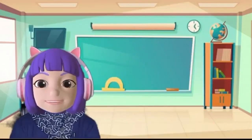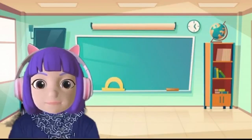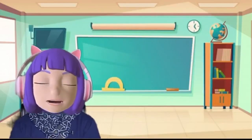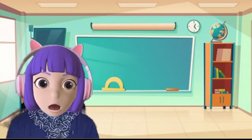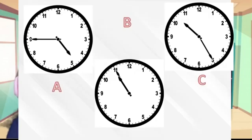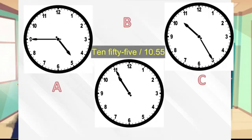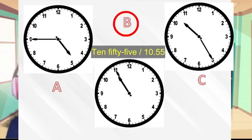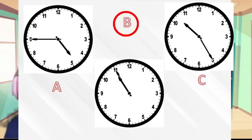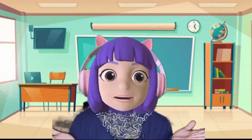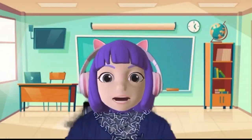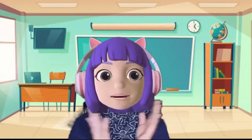Good job! Let's continue. Which clock shows ten fifty-five? Yes! The long hand shows eleven, which equals fifty-five minutes. So friends, are you clear now? I hope you can tell time using the analog clock.